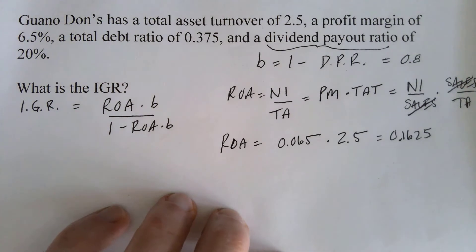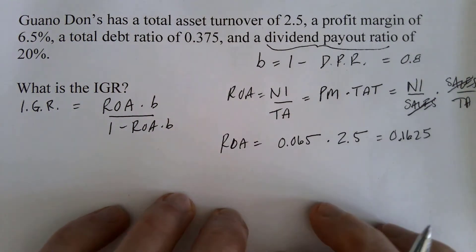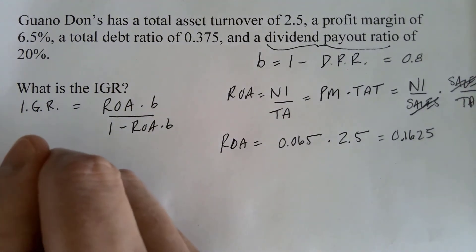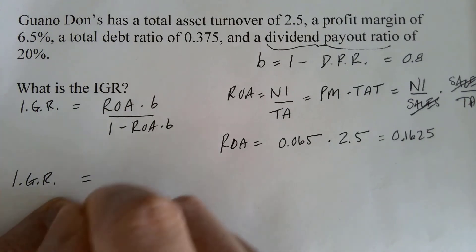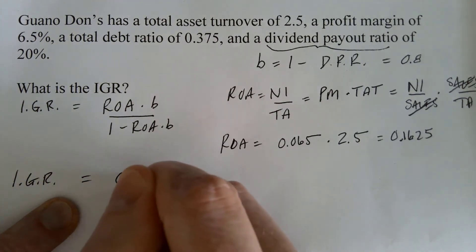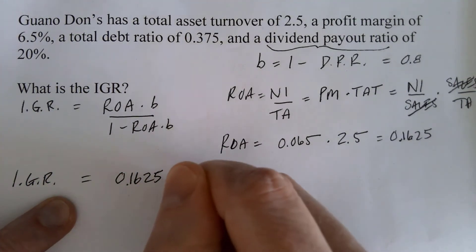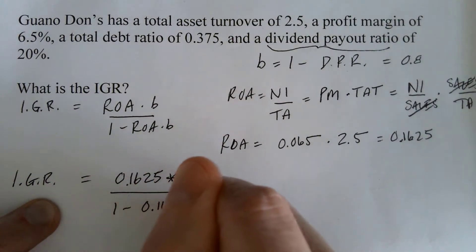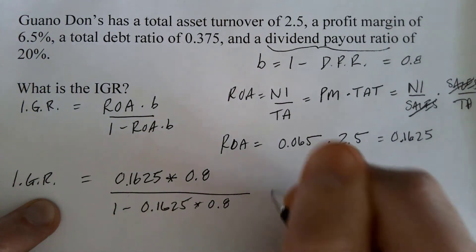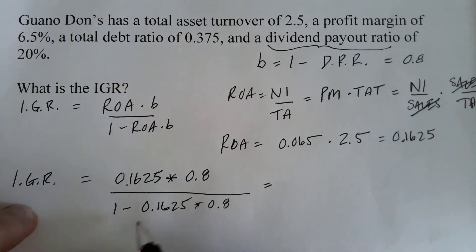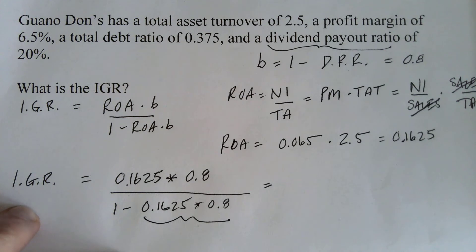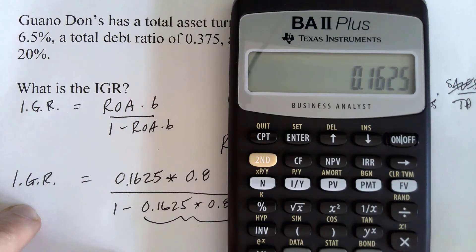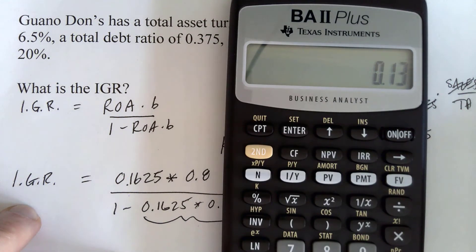So now we have everything we need in order to solve this problem. IGR is equal to 0.1625 times 0.8. Now I want you to notice something here. This thing here is exactly the same as the numerator. There's no need for us to type this stuff in. Let me show you the easy and lazy way to do this. I've still got this number in here from my ROA. So I'm just going to say times 0.8 equals and that's equal to 0.13.